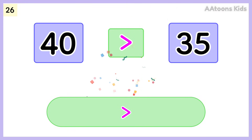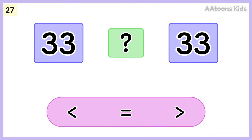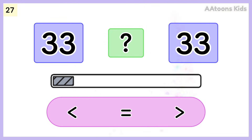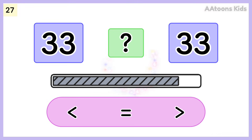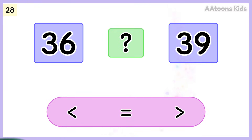Forty is greater than thirty-five. Choose the correct symbol. Thirty-three is equal to thirty-three. Pick the correct symbol.